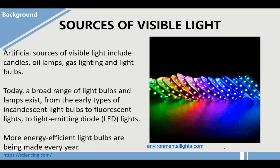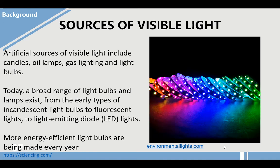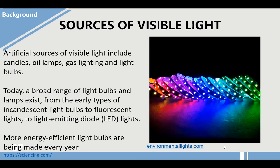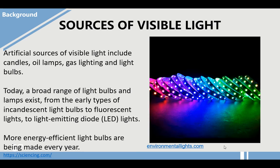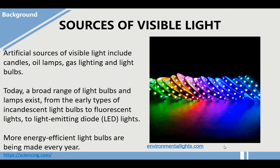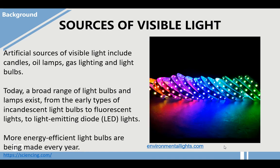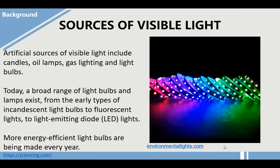Another source of visible light is the artificial sources, such as candles, oil lamps, gas lighting, and light bulbs. Today, a broad range of light bulbs and lamps exist from the early types of incandescent light bulbs to fluorescent lights to light-emitting diode or LED lights. More energy-efficient light bulbs are being made every year.